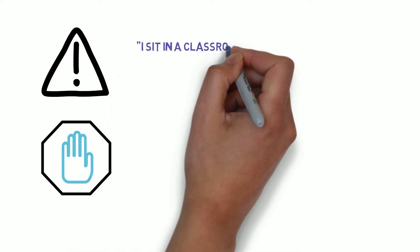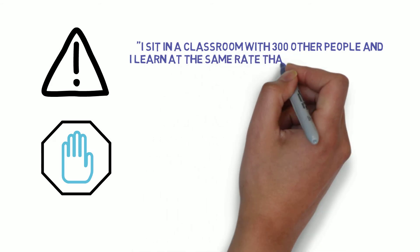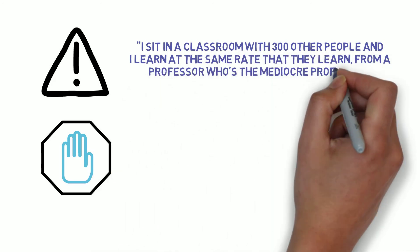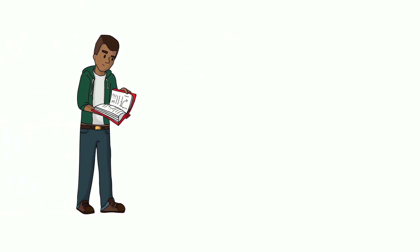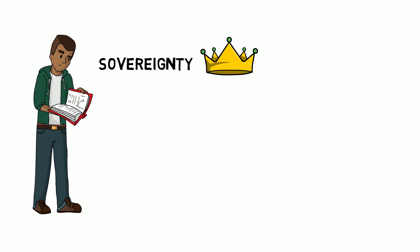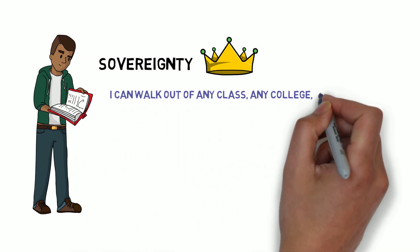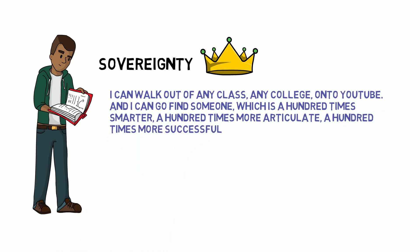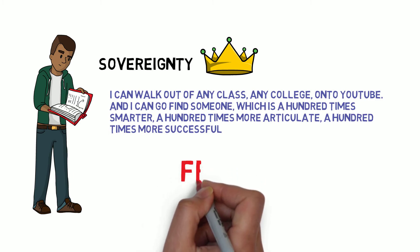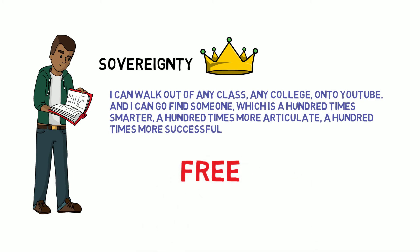And then finally, Michael wants us to be aware that you don't need to be constrained by the 20th century notions of sitting in a classroom with 300 other people and learning at the same rate that they learn from a professor who's the mediocre professor. When you walk out of the class, you exercise your sovereignty. You can walk out of any class, any college onto YouTube and find someone who is a hundred times smarter, a hundred times more articulate, a hundred times more successful, who has uploaded all of their thought and made it available to you for free. You can listen to it at your own time or at your own pace.